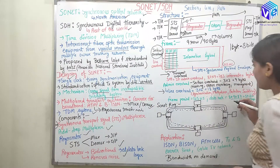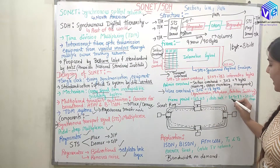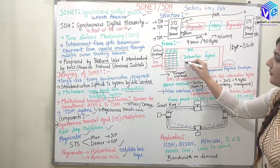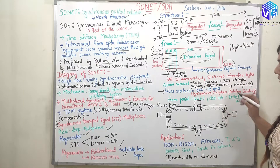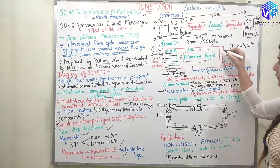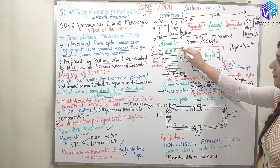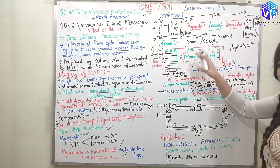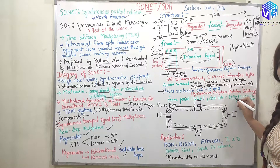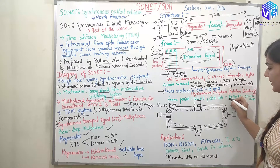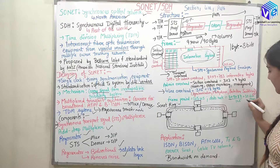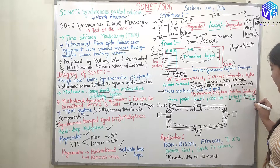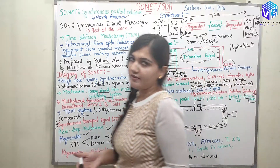The data rate is calculated from the information payload: 9 rows and 87 columns. Total bytes = 87 × 9. Multiplying by 8 gives bits, and dividing by the frame period of 125 microseconds gives the data rate.